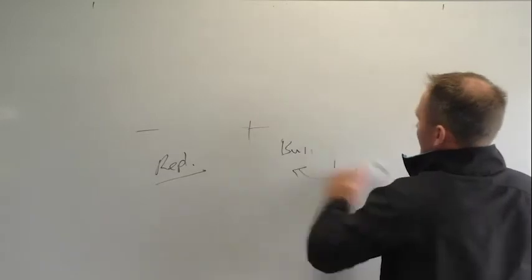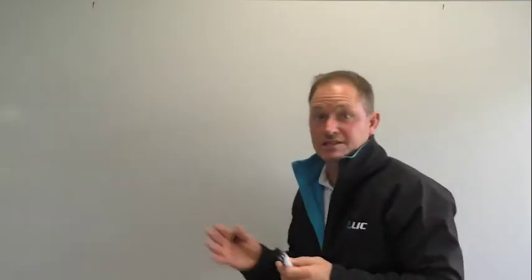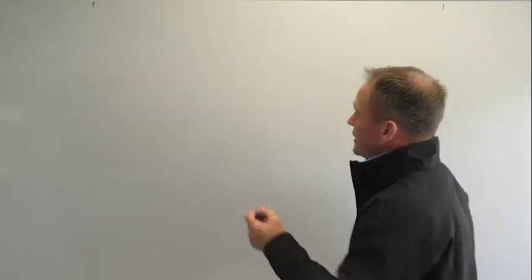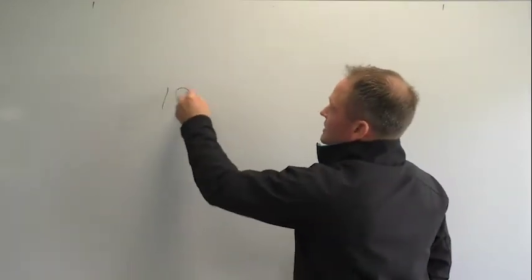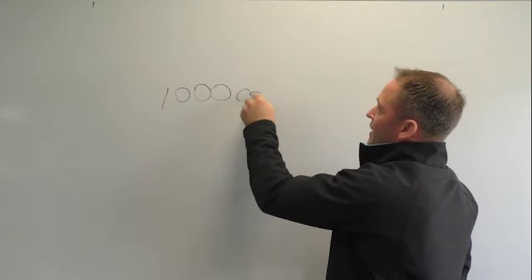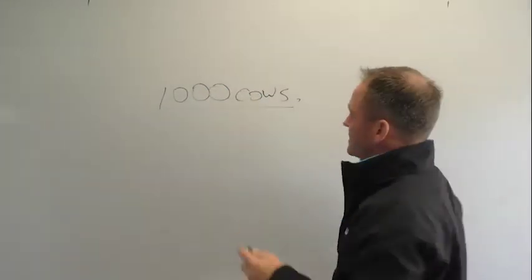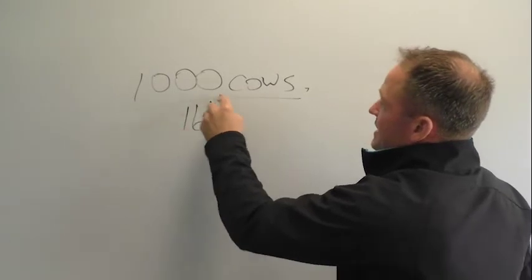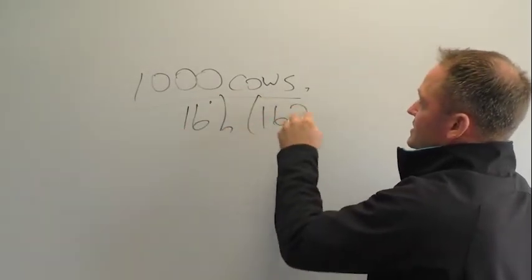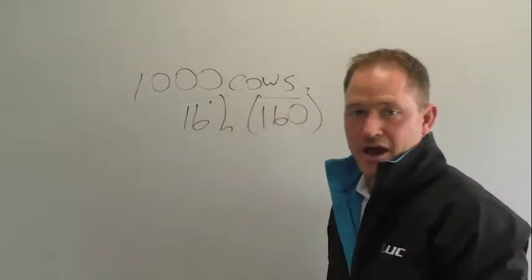If I was just to look at an example of what that would mean, I'm going to use a thousand cow farm only so that the numbers are nice and rounded for us to be able to work with. But this is an actual example of one that I've worked with with a farmer last year. But a thousand cow farm gets to the end of the standard mating period with 16% non-pregnant cows, so 160 odd cows not pregnant on the farm.